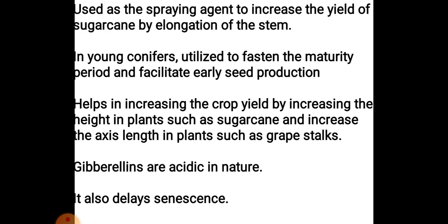They are used as a spraying agent to increase the yield of sugarcane by elongation of the stem. This is a very important characteristic — they increase the length of the axis, which is very effective in the case of grapes and sugarcane. Because when the internodes and stems elongate, the production is also more. Sugarcane stores carbohydrate as sugar in their stems, so spraying with gibberellin causes an increase in stem length and increases the yield by 20 tons per acre, thereby raising the economy.